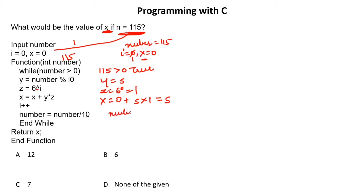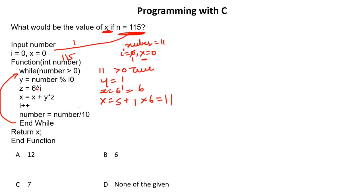Number becomes number divided by 10: 115 / 10 = 11. Is 11 greater than 0? Yes. y = 11 modulo 10 = 1. z = 6 to the power 1 = 6. x = x + y * z = 5 + 1 * 6 = 11. i increments to 2.